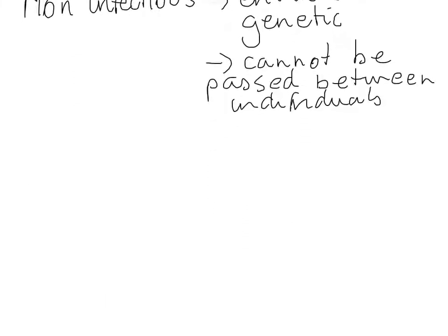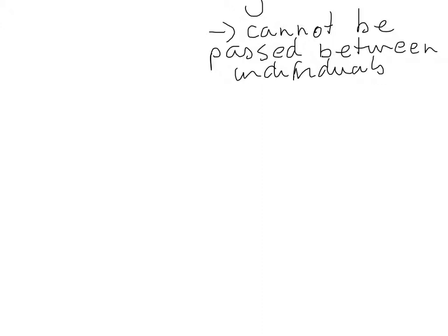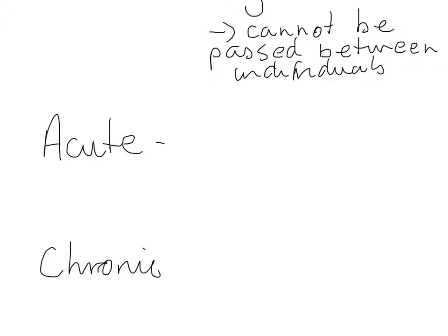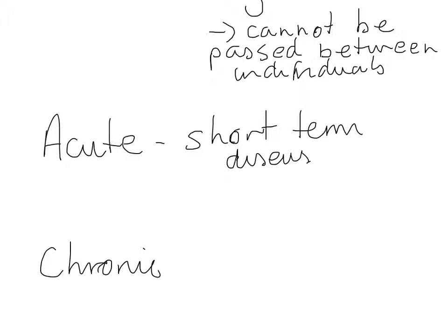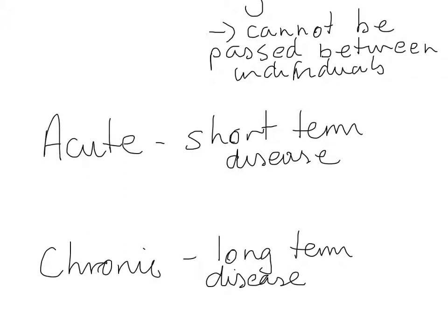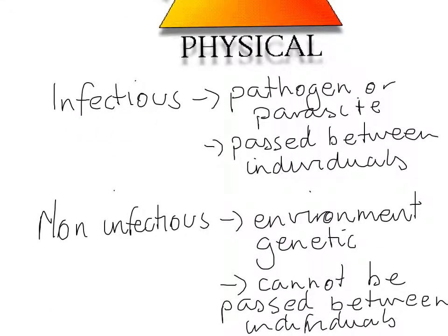Another distinction when talking about disease is between acute and chronic. An acute disease is essentially a short-term disease, which is often curable. A chronic disease is a long-term disease, which is often not curable — it can often be treated and controlled but not necessarily cured. Be aware of the difference between acute and chronic disease, as well as the difference between infectious and non-infectious disease.